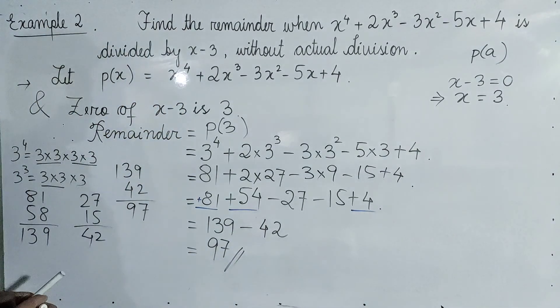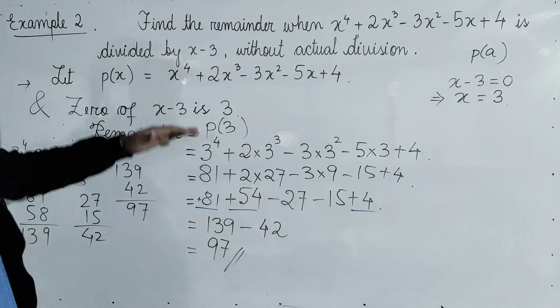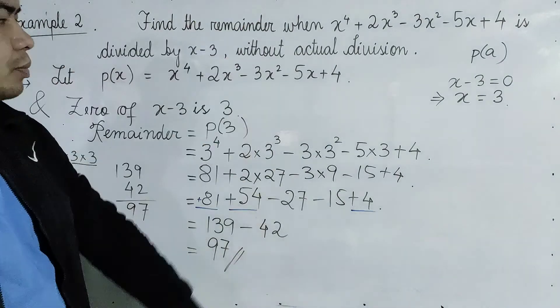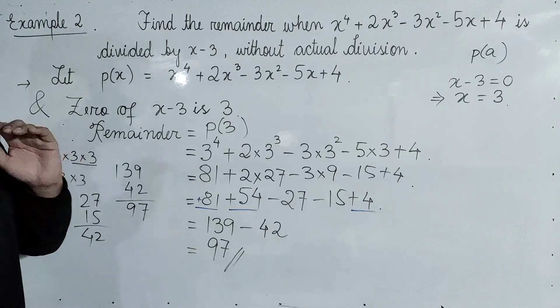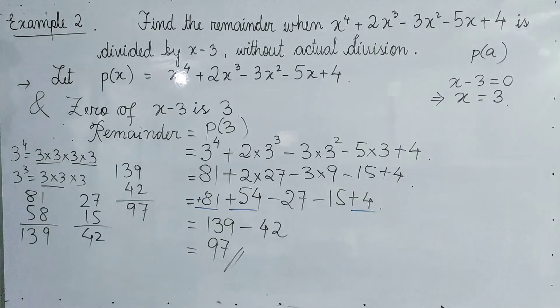From the remainder theorem value, the remainder is 97. And from actual division, the remainder is also 97. So the remainder is confirmed to be 97.